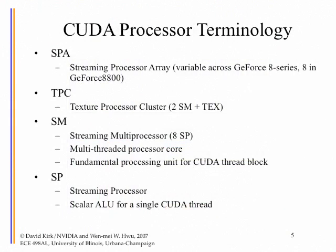This slide is a quick summary of the terminology: SPA = Streaming Processor Array, TPC = Texture Processor Cluster, SM = Streaming Multiprocessor, SP = Streaming Processor. These are just definitions and acronyms — a one-page summary so if you get confused you can look it up.